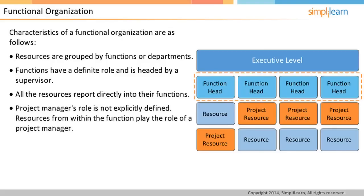In a functional organization, the project manager's role is not explicitly called out. When a functional organization embarks on a project, each of the functions involved may volunteer some resources to work on the project. One of these resources may end up playing the project manager's role. The resource assignments may not even be full-time and sometimes even the project manager is part-time. Since the project manager has no authority over any of the resources, they are dependent on the functional heads, making it more challenging to coordinate the team.